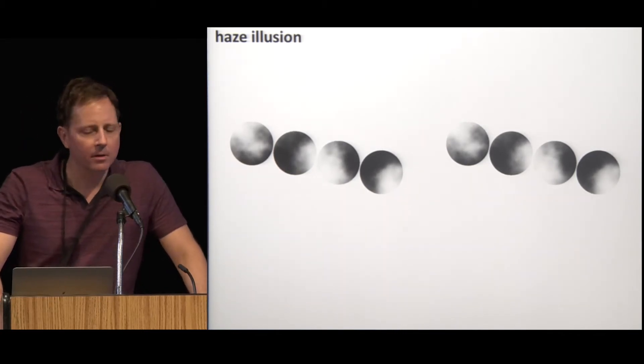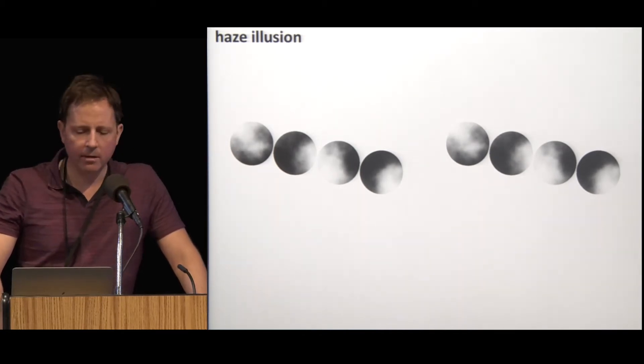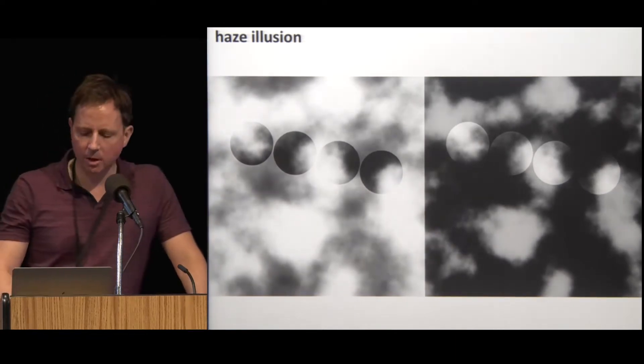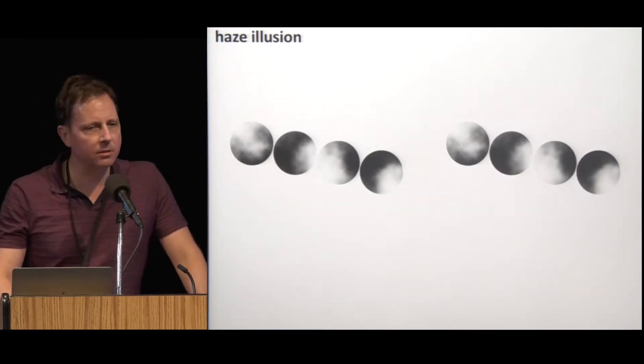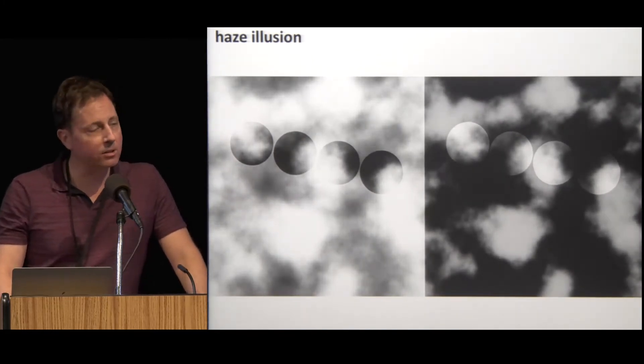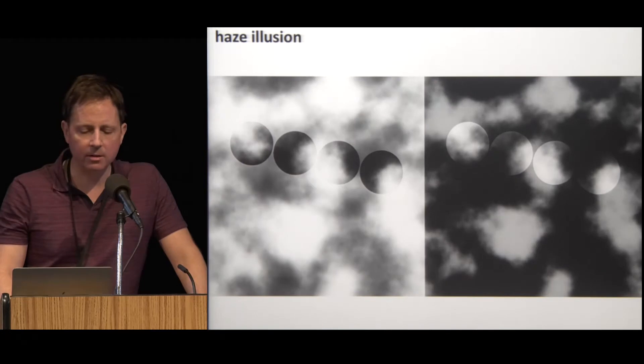The two sets of disks are identical here, but when we add the right context the disks on the left look much, much darker. Here the disks in isolation, here the disks in context, and the effect is so strong here that it's just hard to believe it's an illusion actually.